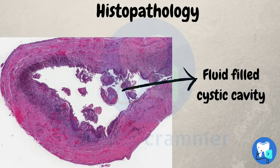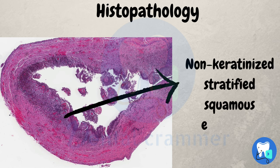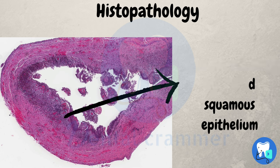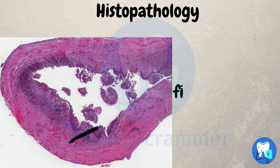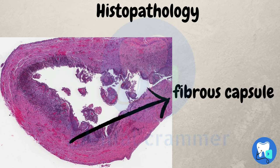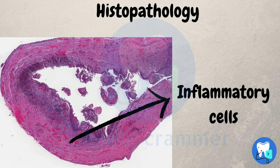Now let's move into the histopathology of the cyst. It consists of a fluid-filled cystic cavity. The epithelium is non-keratinized stratified squamous. Eosinophilic calcifications known as russian or hyaline bodies are present within the epithelium. Fibrous capsules contain chronic inflammatory cells such as lymphocytes, plasma cells and macrophages. It also has cholesterol clefts in it.